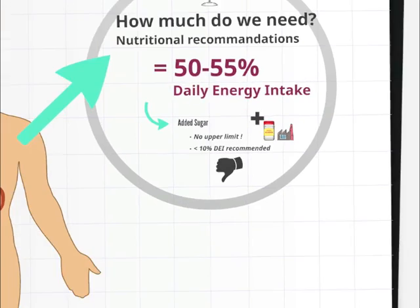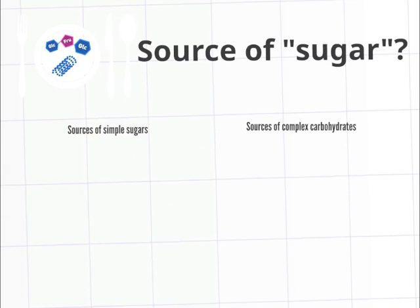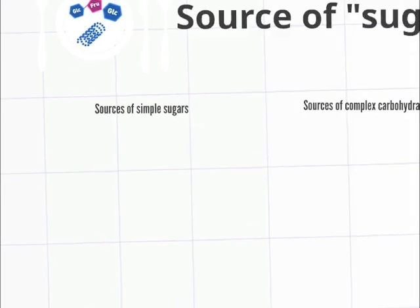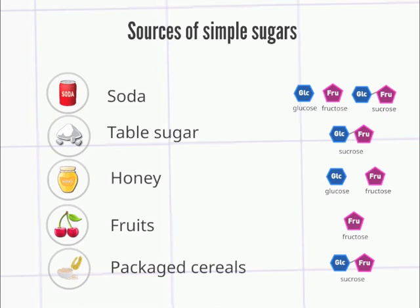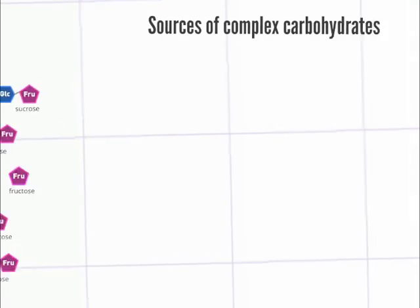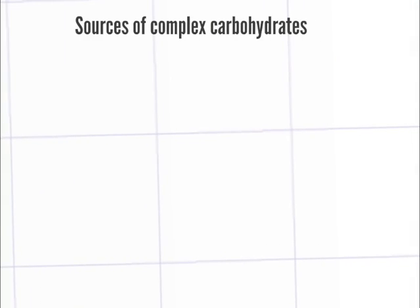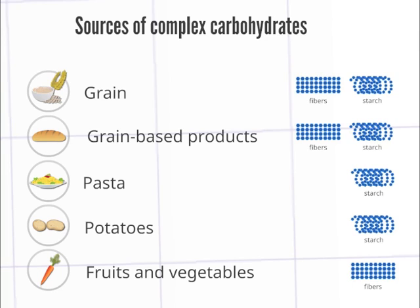Where is sugar? Simple carbohydrates are mostly found in products such as soda, table sugar, honey, fruits, and packaged cereals. Complex carbohydrates are mostly found in grain or grain-based products, potatoes, or fruits and vegetables.